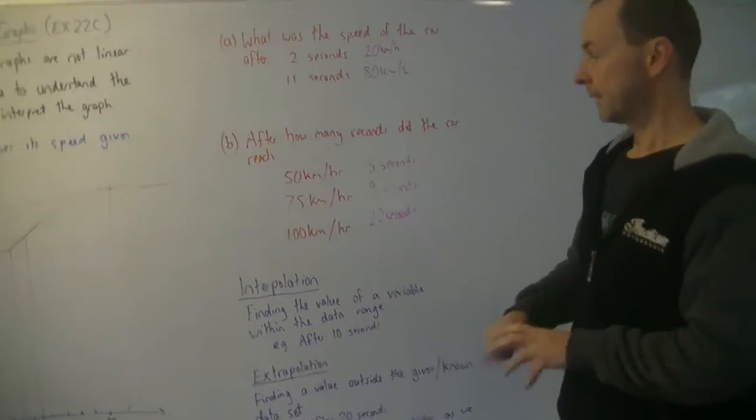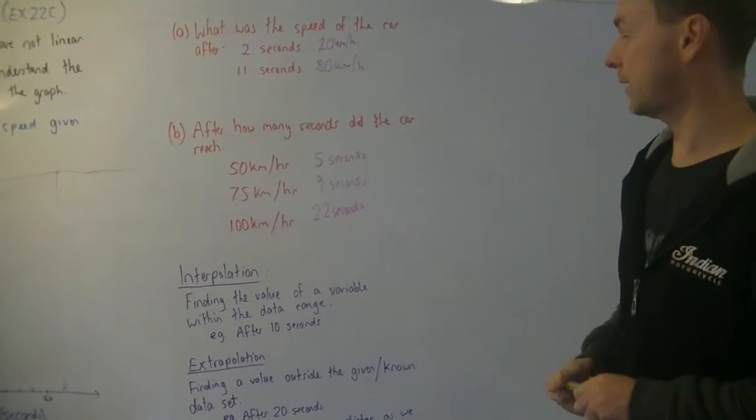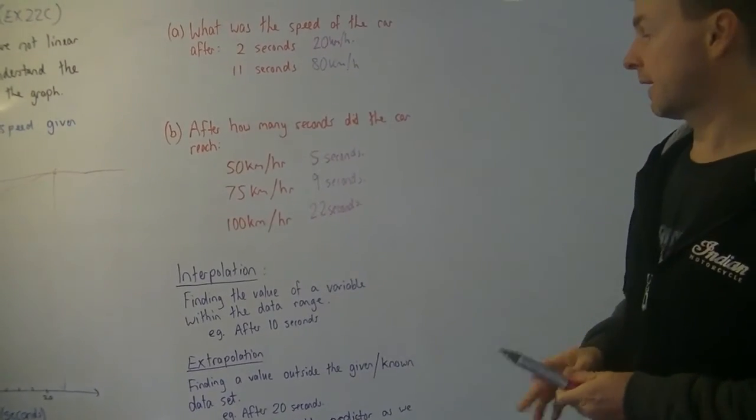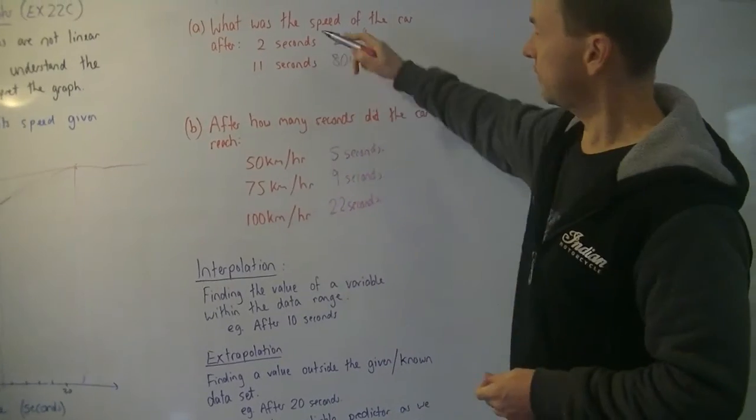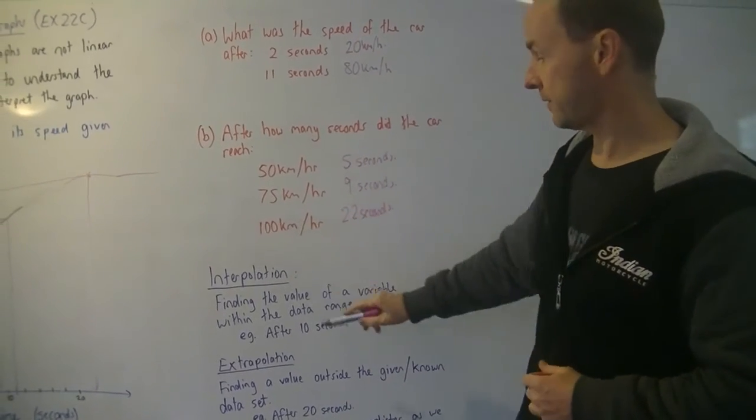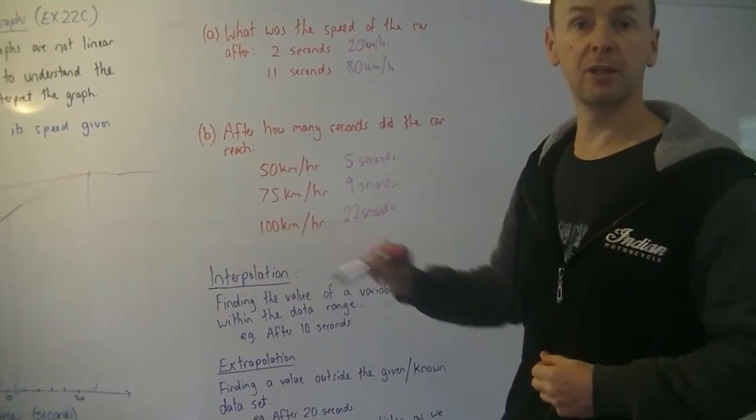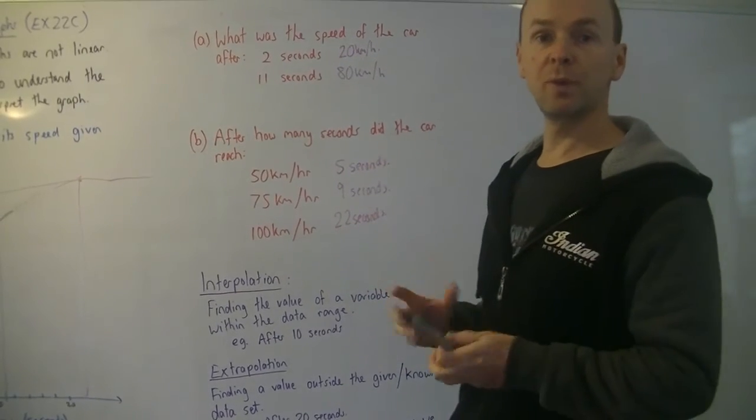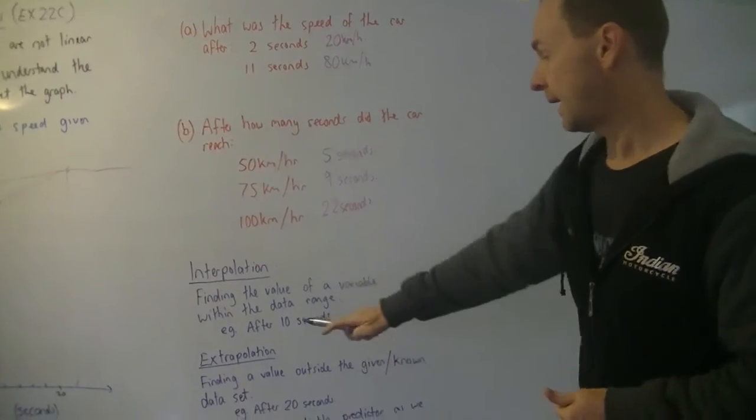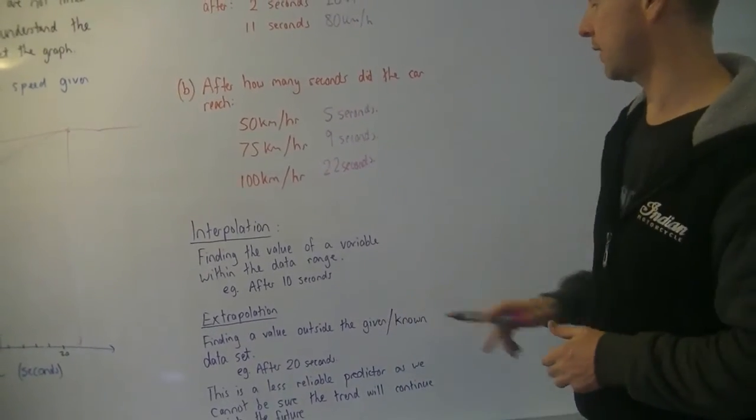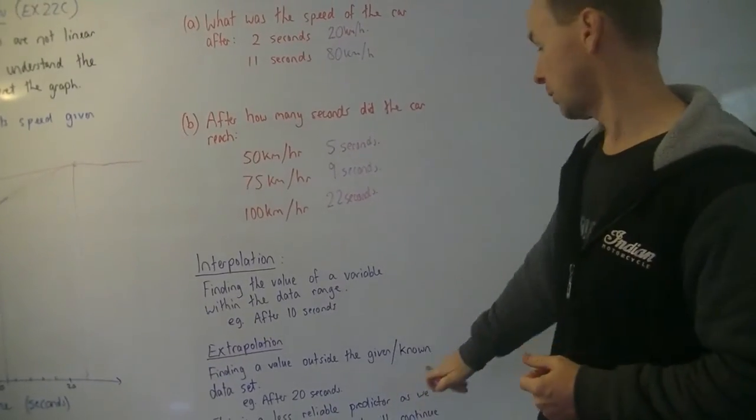And the last couple of things. Interpolation is finding a value of a variable within the data range. So all these questions, other than the 100 kilometres, that's examples of interpolation because it's using values within the data set that's known.